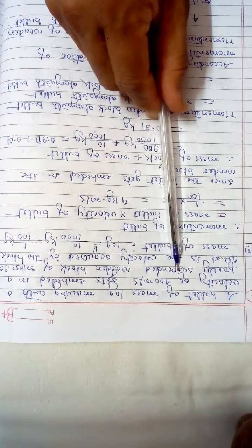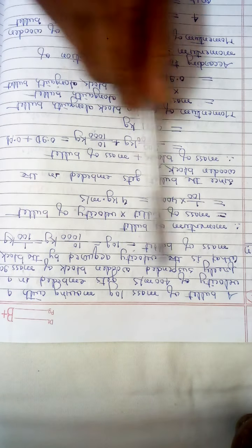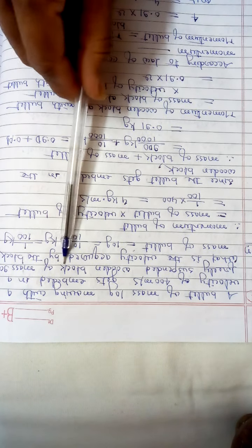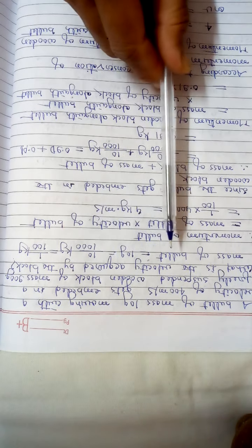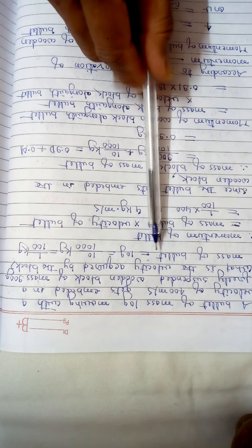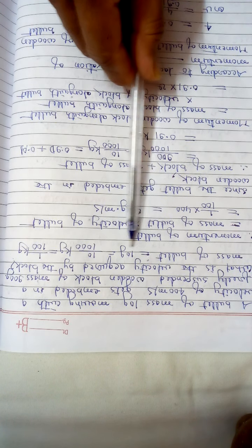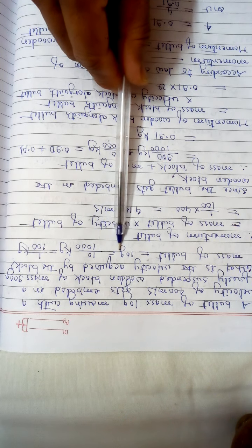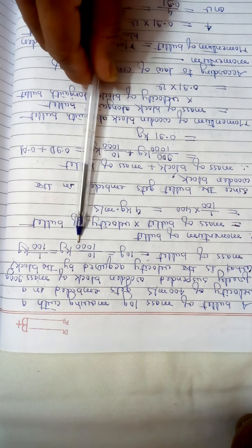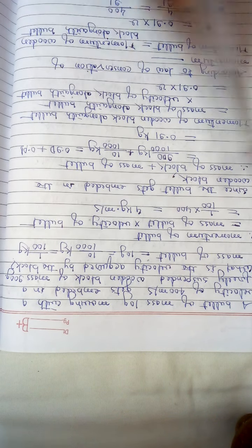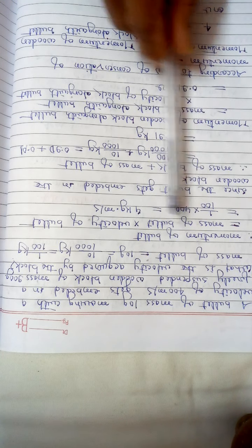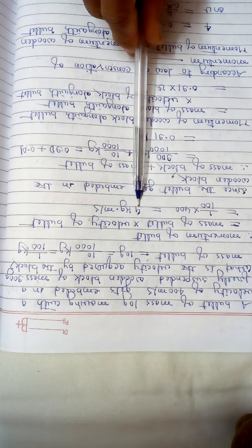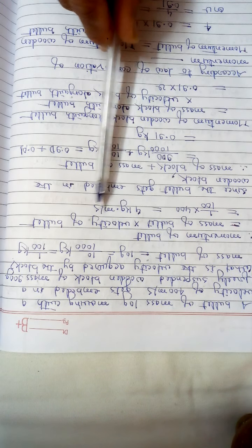Next question: A bullet of mass 10 grams moving with a velocity of 400 m/s gets embedded in a freely suspended wooden block of mass 900 grams. What is the velocity acquired by the block? First we convert the mass of the bullet into kilograms by dividing by 1000, giving 1 upon 100 kg. Therefore the momentum of the bullet equals mass into velocity, which equals 4 kg·m/s.